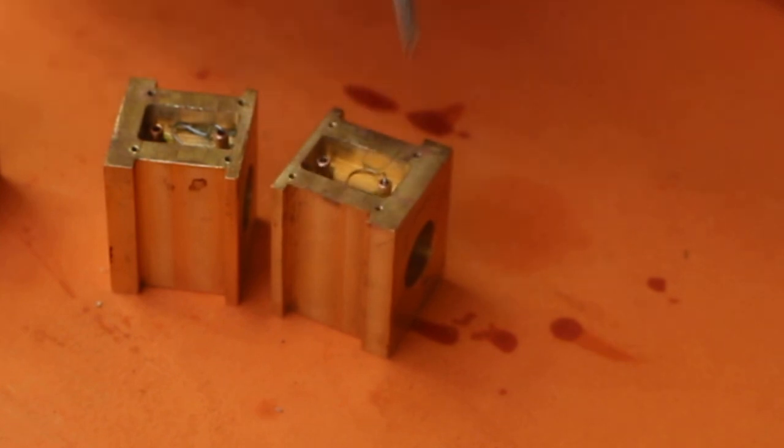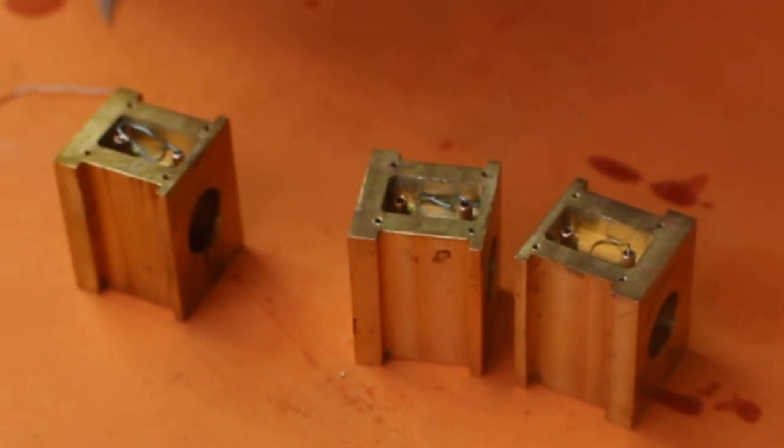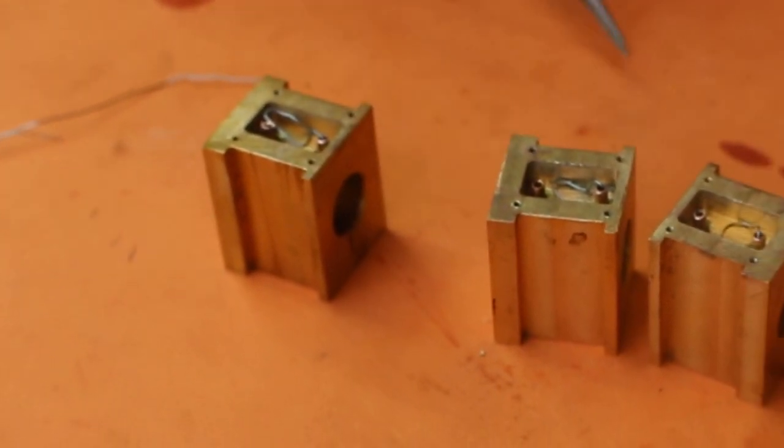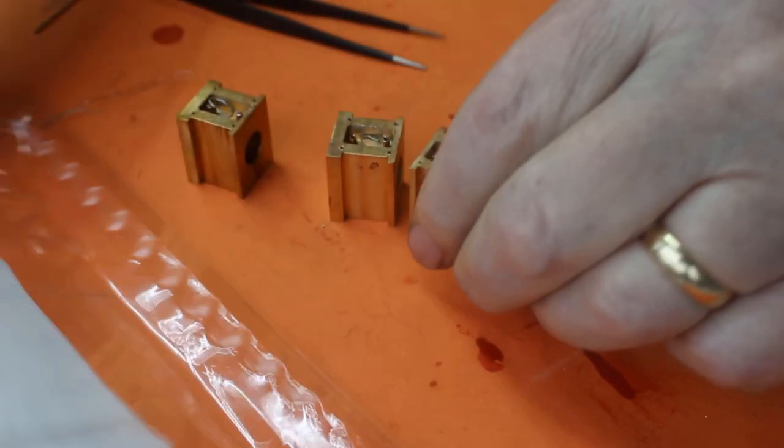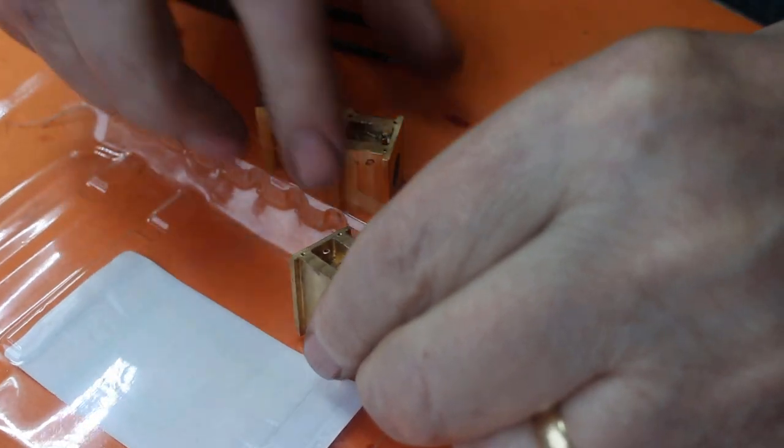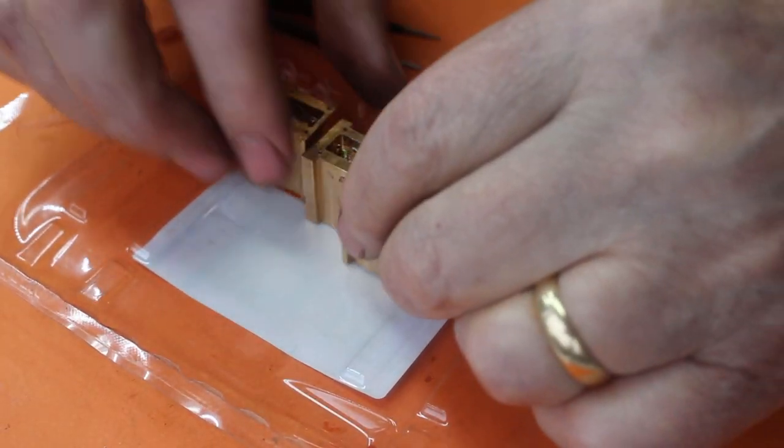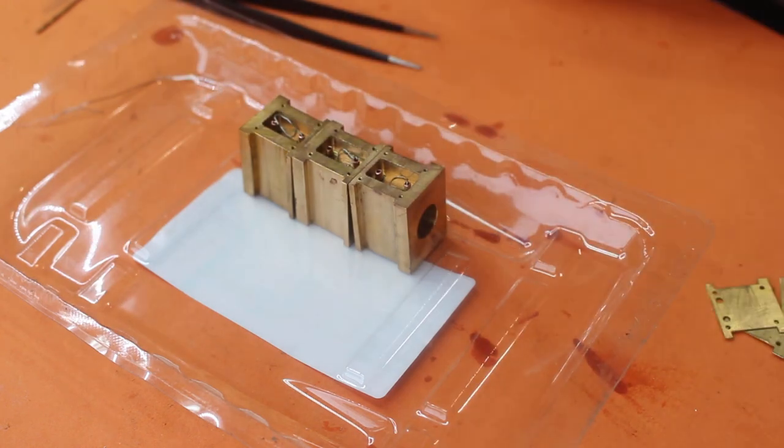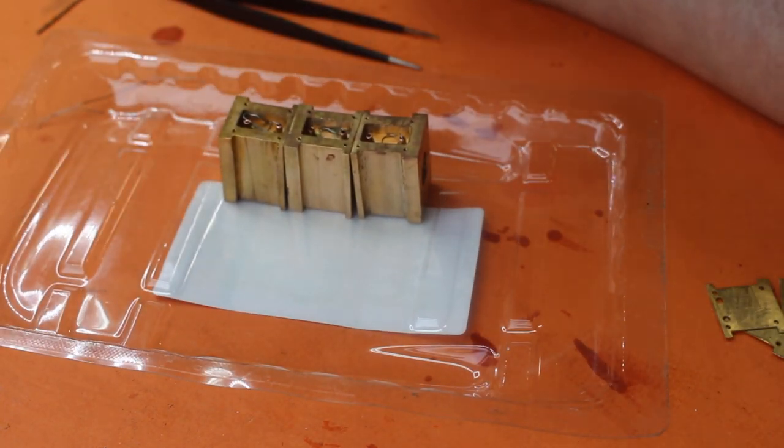So this one has 0.25mm wire. This has 0.35mm wire and this has 0.5mm. So I'm going to fill those with oil and see if any of them actually move the oil through the copper pipe. And if so how quickly.